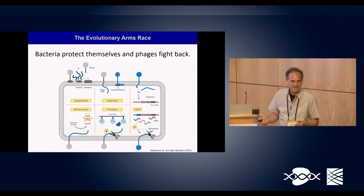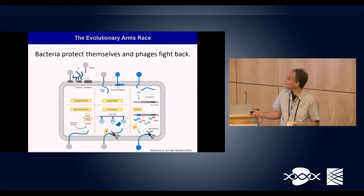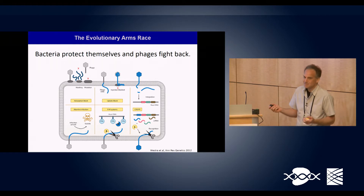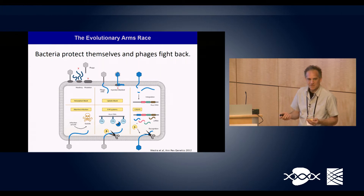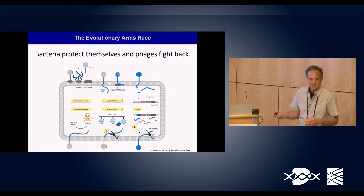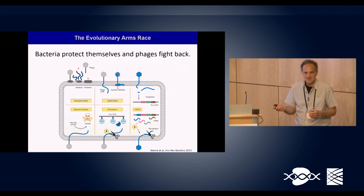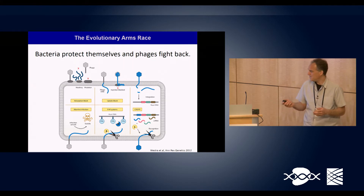Viruses and bacteria are in what we call an evolutionary arms race — the phages don't take these defenses sitting down. What I'm going to tell you today is about how phages have fought back against CRISPR systems and developed proteins to stop them. I'll tell the story in a historical way because we discovered these in our lab a number of years ago, and it's interesting to reflect how we found these things without really trying.